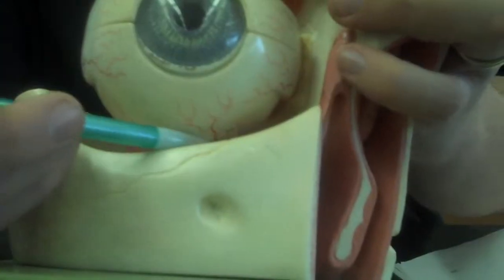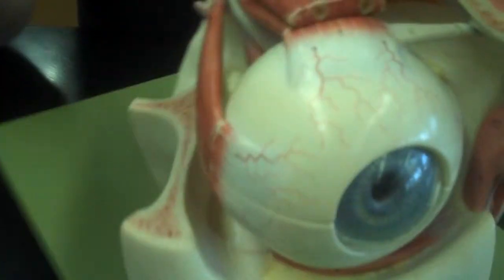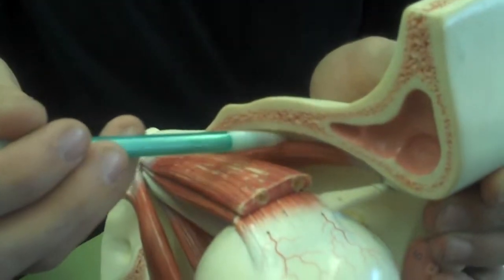Then we have the inferior oblique beneath the eye, and the superior oblique, as I just mentioned, in the corner of the eye.